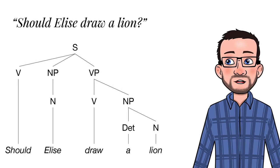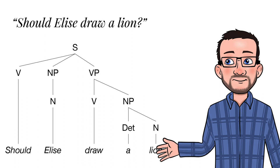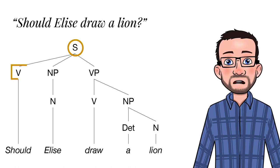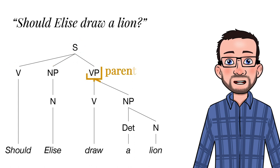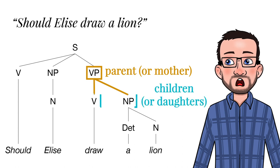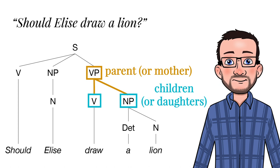As you can see here for the question should Elisa draw a lion, the S stands for sentence and its immediate constituents are a verb, an NP or noun phrase, and a VP or verb phrase. Those constituents have sub-constituents as well. The verb phrase, for instance, is called the parent node or the mother node of two children: a verb and another noun phrase. A phrase structure grammar is a list of rules that describe local tree configurations. Local means that a rule only describes the relation between a parent node and its immediate children.